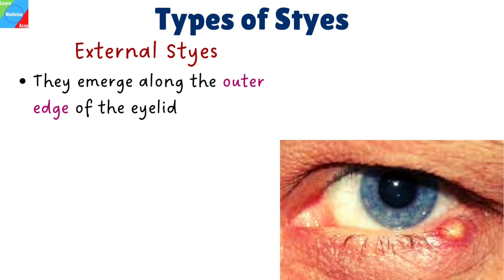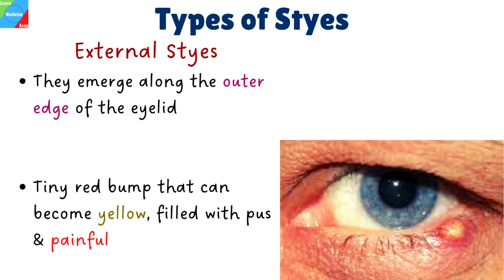There are two types of styes: external styes, which is the more common type, and internal styes, which are quite uncommon. External styes emerge along the outer edge of the eyelid. They can become yellow, filled with pus, and painful when touched. Although it may begin as a tiny red bump, it eventually turns into a collection of pus or a small abscess and appears as a yellow pus-filled spot.